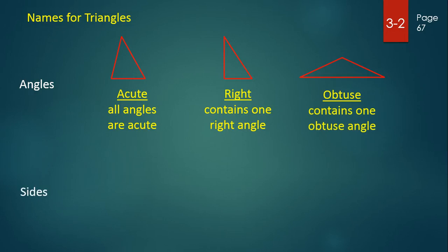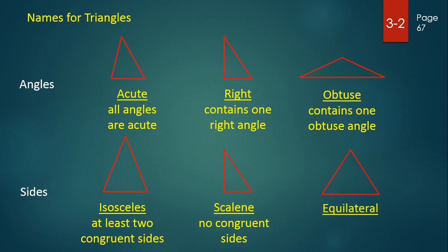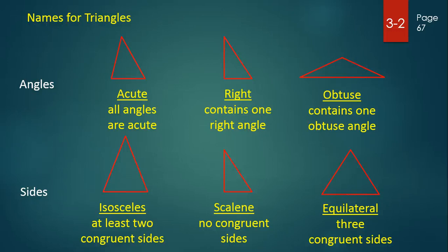We could also choose to name triangles by their sides. This is an isosceles triangle because it has at least two congruent sides. This is a scalene triangle because it has no congruent sides. And this is an equilateral triangle because all three sides are congruent. That also means we can give both an angle name and a side name to a triangle — so we could say something is an acute isosceles triangle or an obtuse scalene triangle.